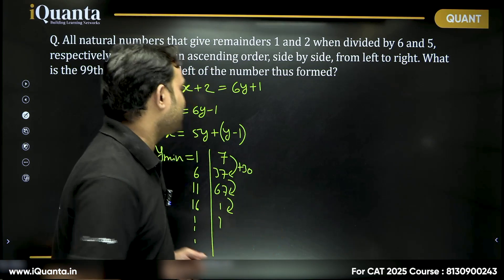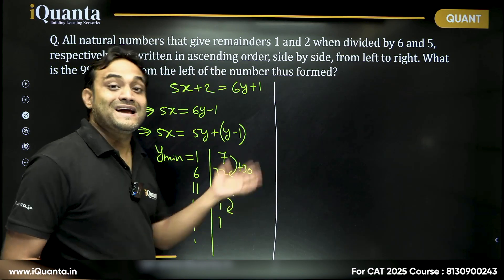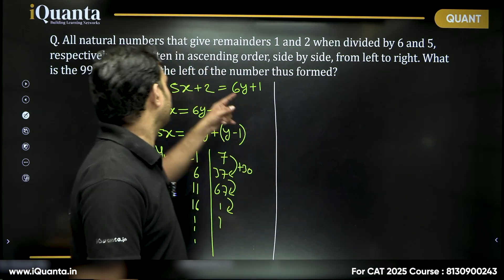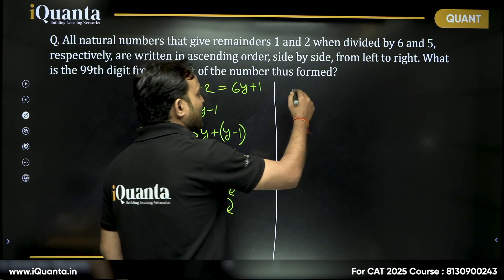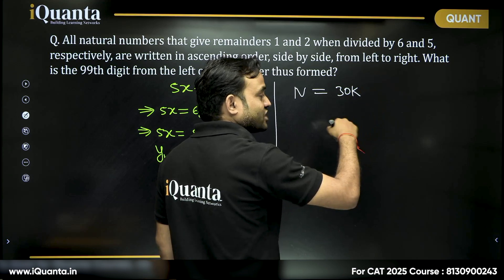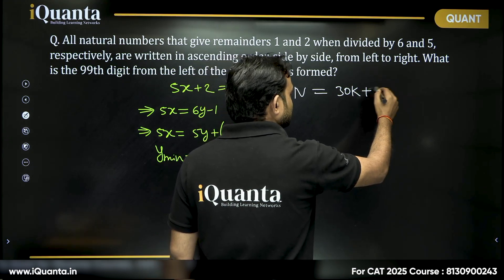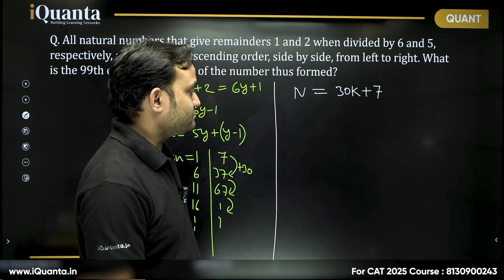So you can follow this method in other questions as well, that once you get the smallest number, next number, you can add the LCM of these two divisors and that you will get the number. So our number N is of the form 30k plus 7, LCM of 5 and 6 is 30k plus the smallest number which is 7. This is our number.